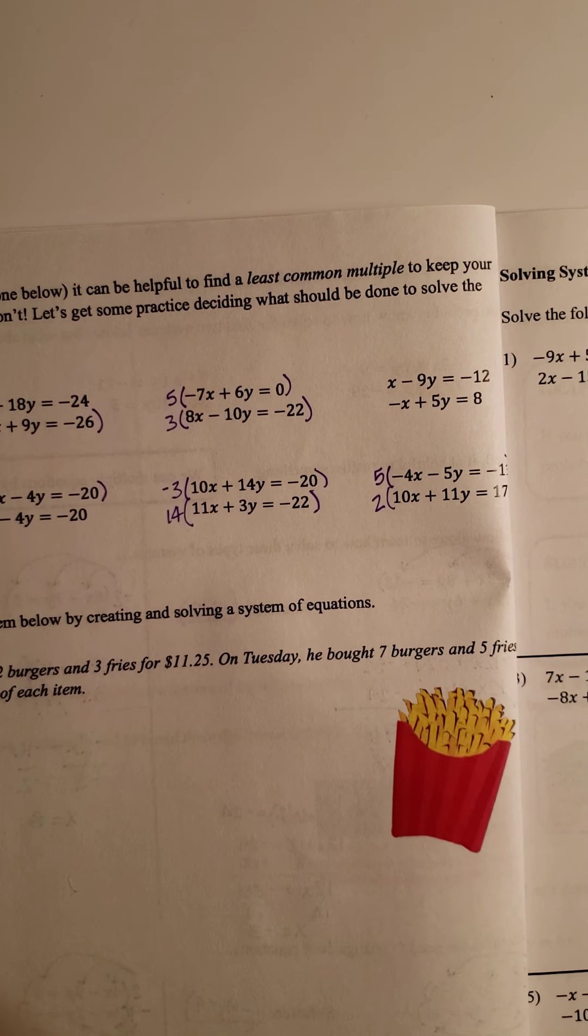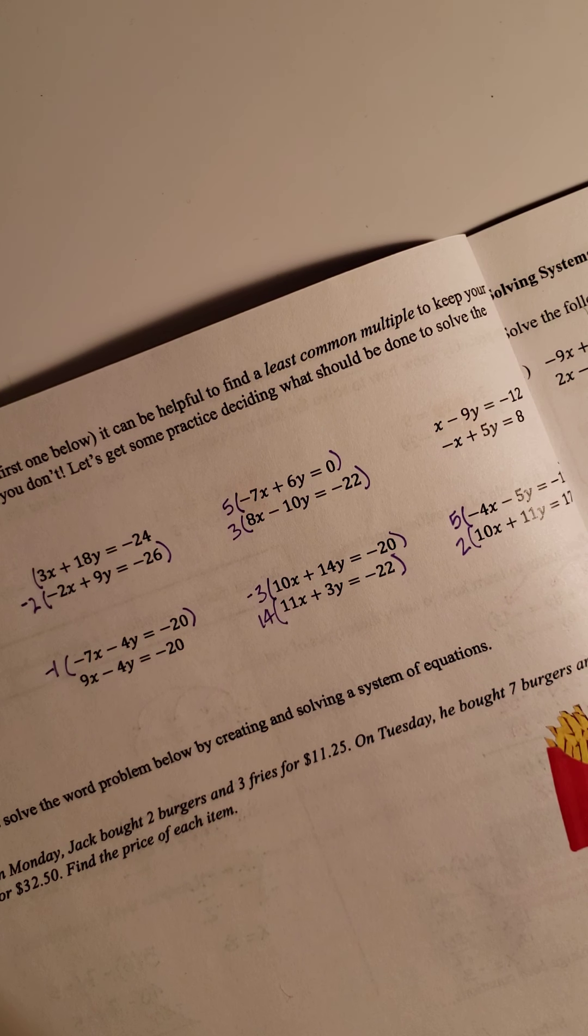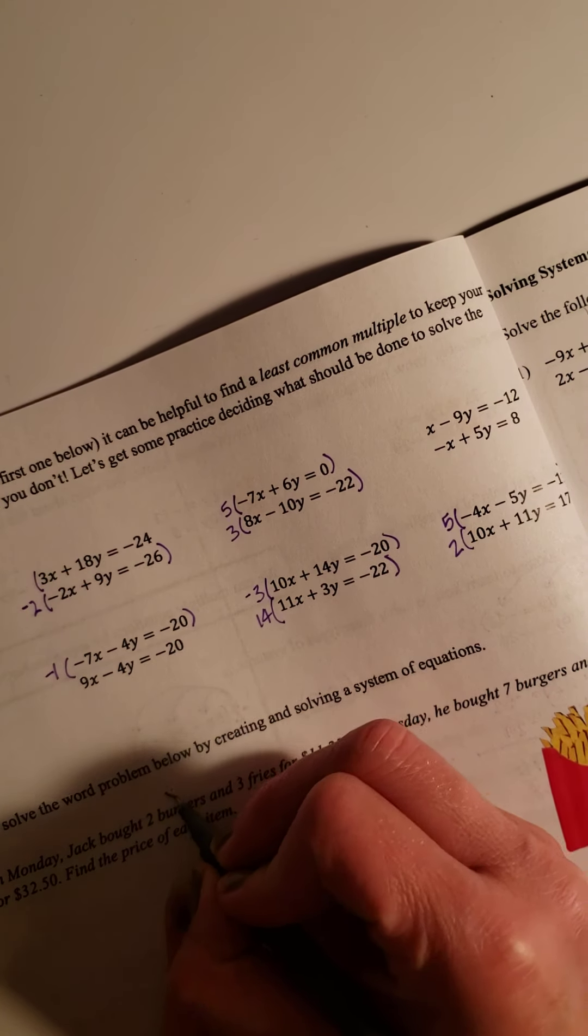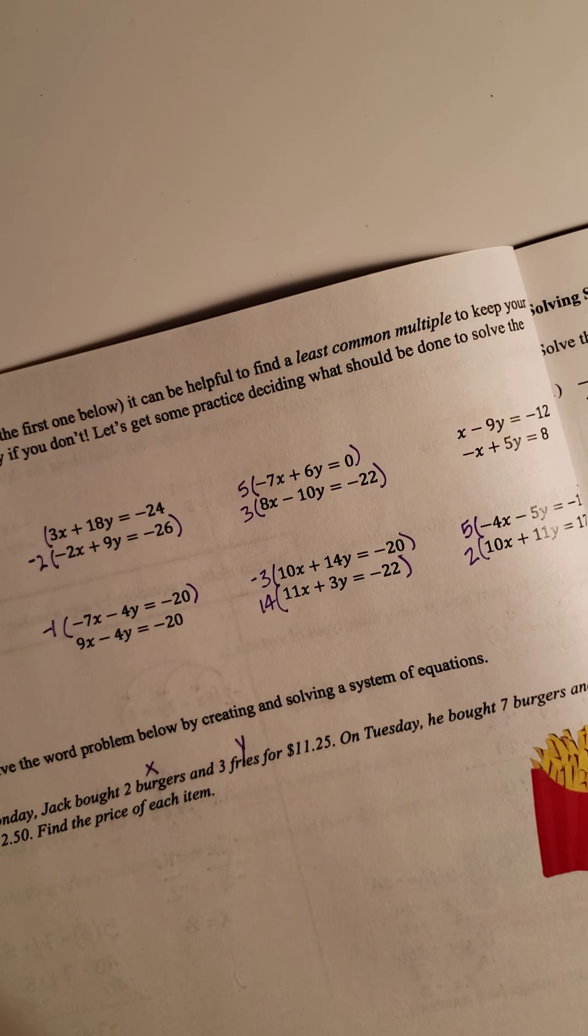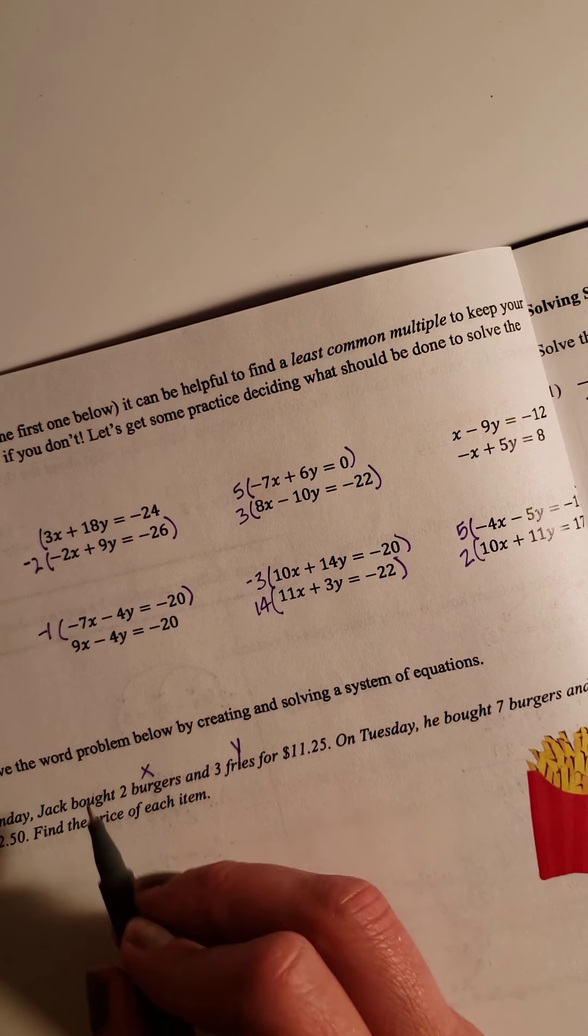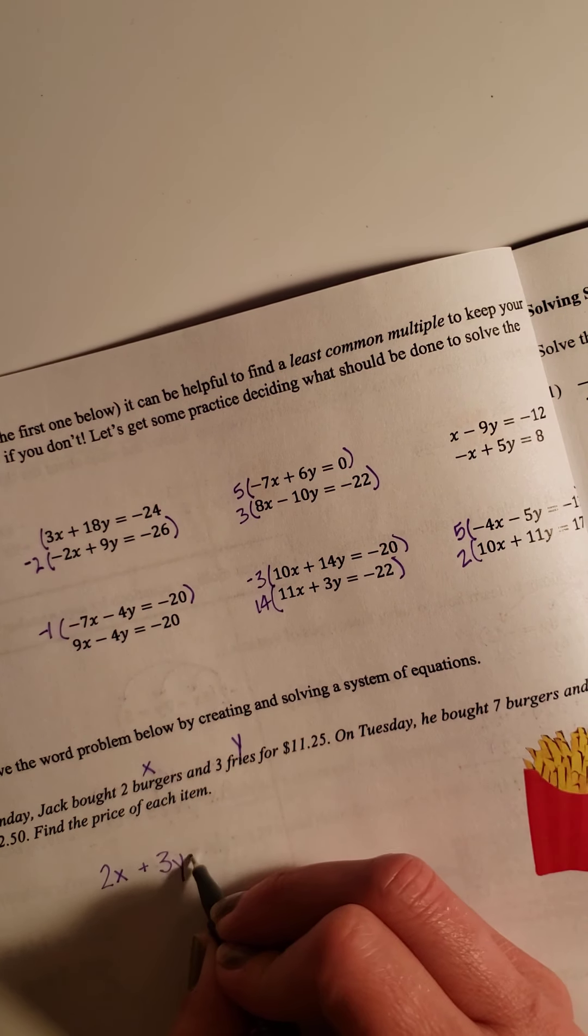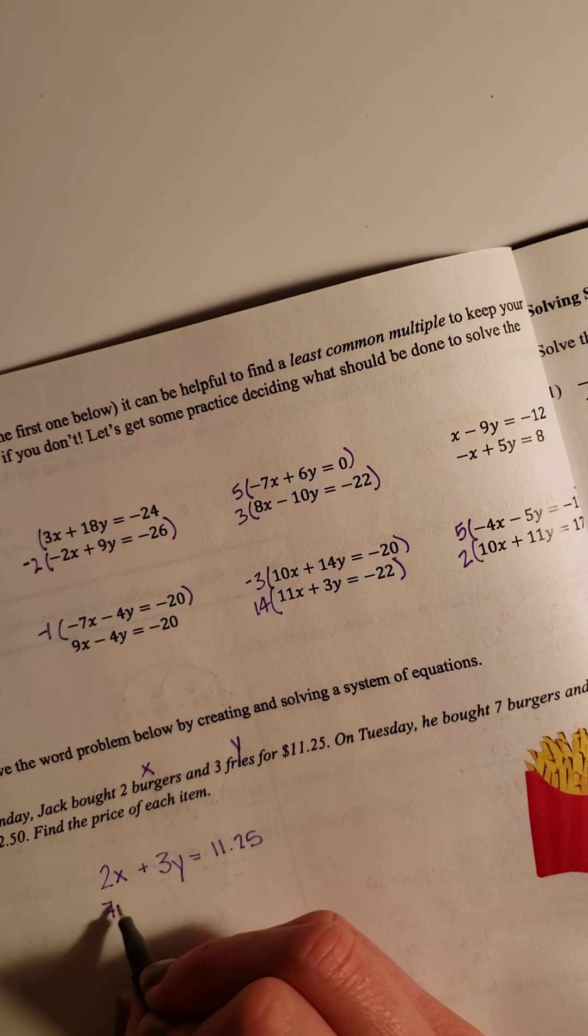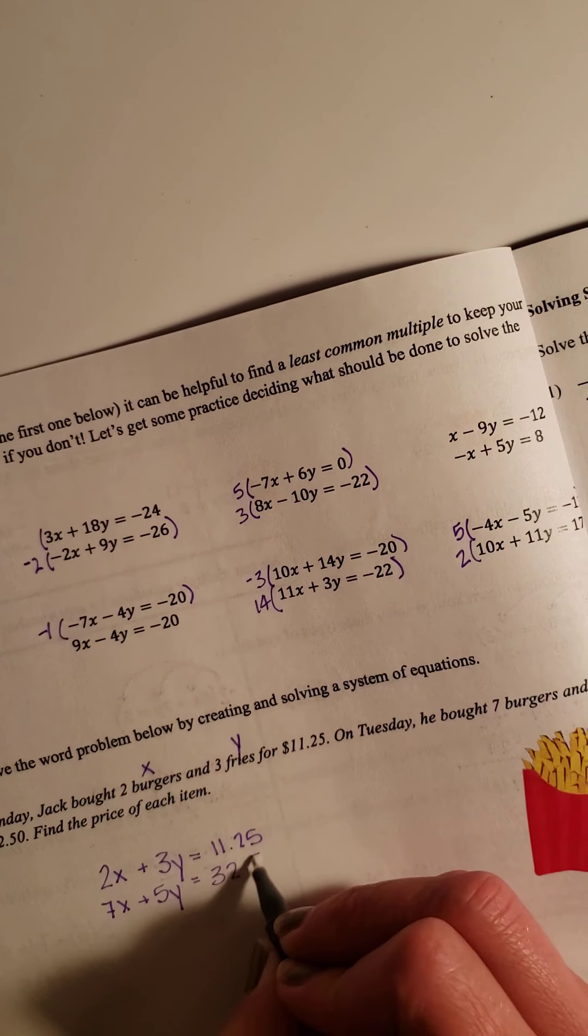So the last thing we're going to do is this word problem. First, we're going to set up our system. So on Monday, Jack bought 2 burgers and 3 fries for $11.25. So right away, I'm going to make burgers X, fries Y. On Tuesday, he bought 7 burgers and 5 fries for $32.50. Find the price of each item. So on Monday, he bought 2 burgers plus 3 fries. And it costs a total of $11.25. And Tuesday, he bought 7 burgers plus 5 fries. And it was $32.50.